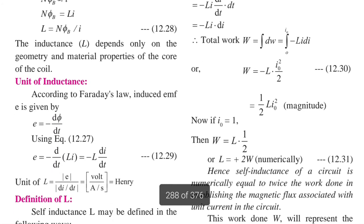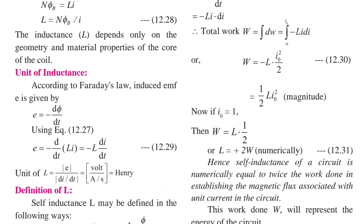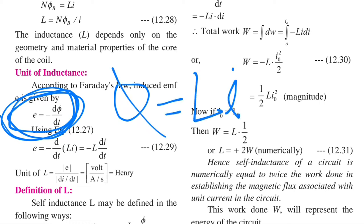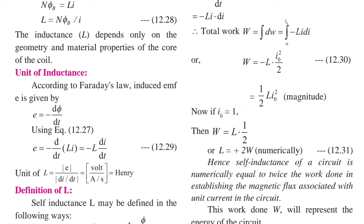Now we look at the unit of inductance. According to Faraday's law, induced EMF is given by e = −dφ/dt. Substituting φ = LI, we get e = −L·(dI/dt), since self inductance L is constant and its derivative is not taken.